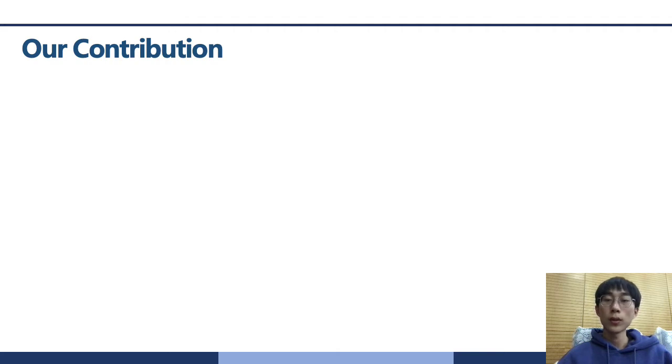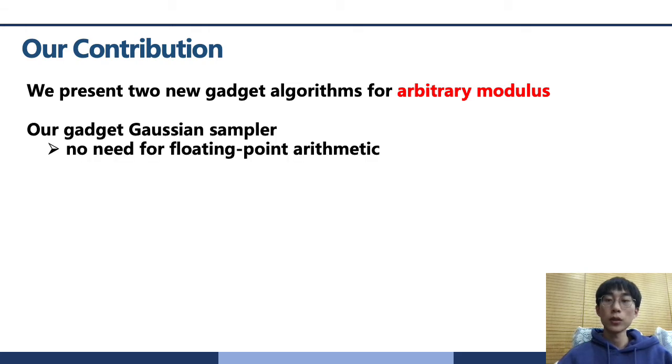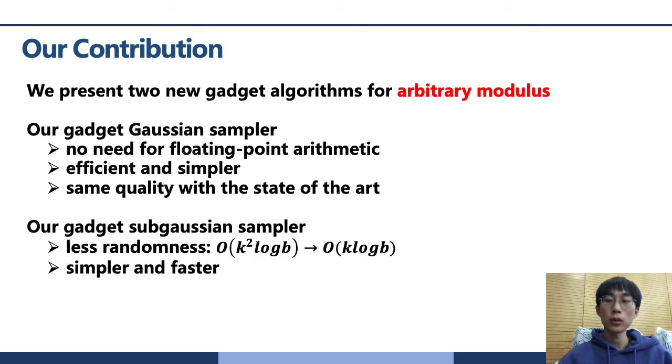Toward better compatibility of a gadget toolkit, we present two randomized gadget algorithms for arbitrary modulus. We present a gadget Gaussian sampler that avoids the floating-point arithmetic in existing algorithms. Compared with the previous algorithms, our sampler achieves similar quality and asymptotic complexity, but is simpler and highly parallelizable. We also propose a new gadget sub-Gaussian sampler. It's simpler, faster, and needs asymptotically less randomness. In addition, our sampler is convenient to achieve a close even better quality in practice.